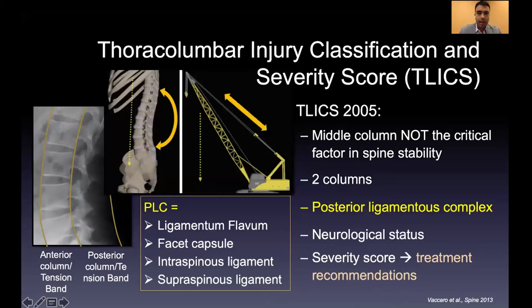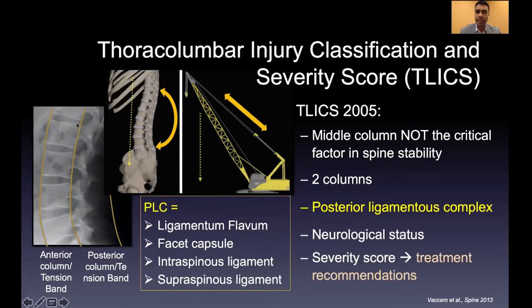The thoracolumbar injury classification severity score, or TLICS, is a grading scale that offers essentially a guide for surgeons. When looking at a patient's radiographic imaging and neurologic exam, it gives you an idea of the urgency or timing of surgery — does this patient need surgery or not?